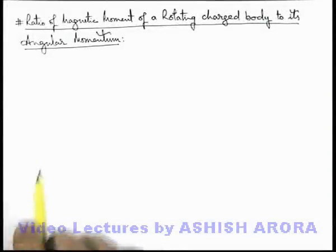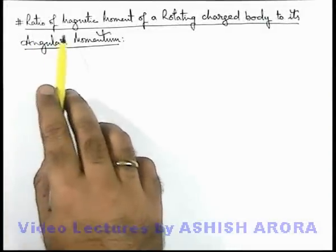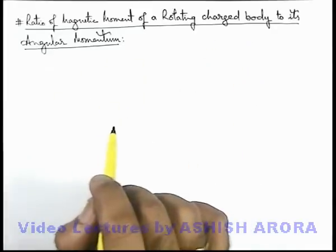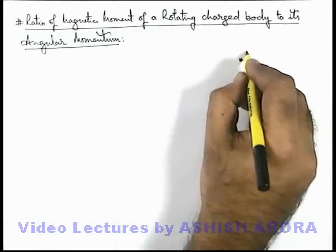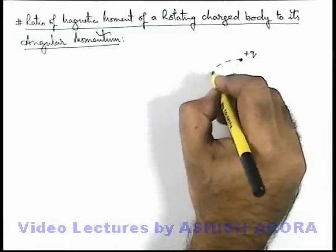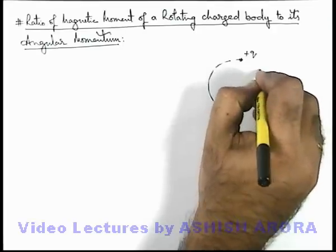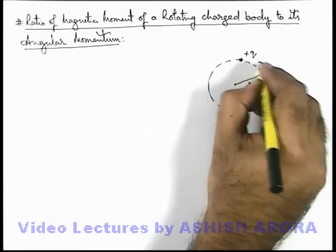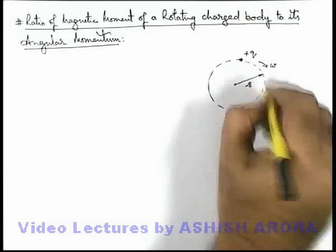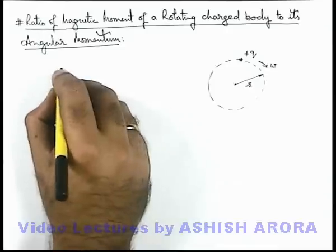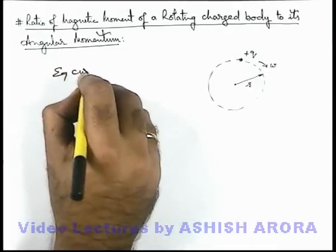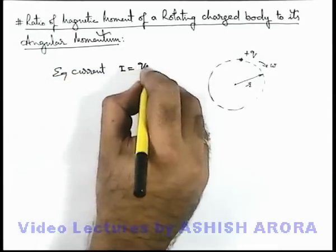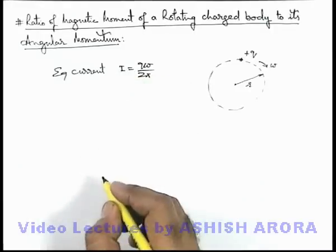Let us discuss an important concept: the ratio of magnetic moment of a rotating charged body to its angular momentum. Starting with a point charge +q circulating in a circle of radius r with angular speed ω. If it is rotating very fast, we can directly say its equivalent current can be given as qω/2π, which we already discussed in previous sections.